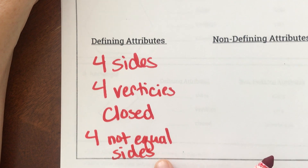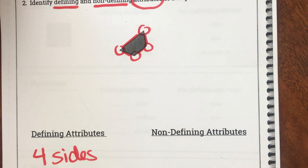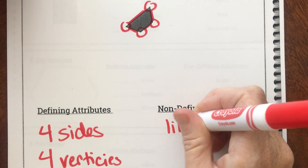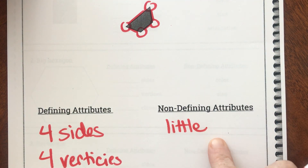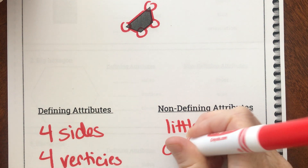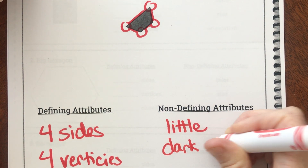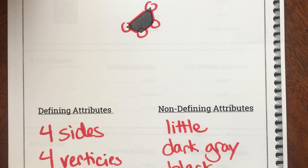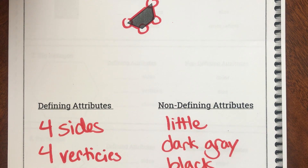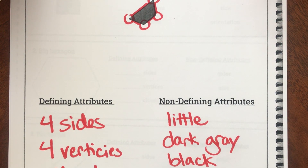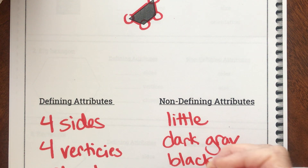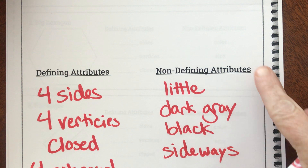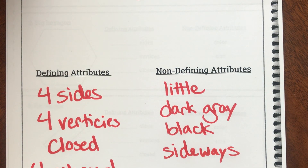Those are all defining attributes — if I told you those things you should be able to guess it's a trapezoid. But what are some non-defining things I could say? I could say it's little — that's a pretty little trapezoid. I could say it's dark gray or black. I could say it looks like it's sideways. All of these are attributes — things I could say about the shape — but none of them help me figure out what that shape was.